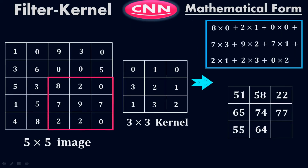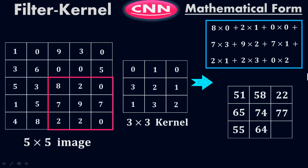And finally, the last three by three matrix: 8×0 + 2×1 + 2×1 + 0×0 + 7×3 + 9×2 + 7×1 + 2×1 + 2×3 + 0×2. After simplification, you will get the ninth and last value, which is 56. So we finally got the three by three feature map matrix — that's what we were trying to achieve.